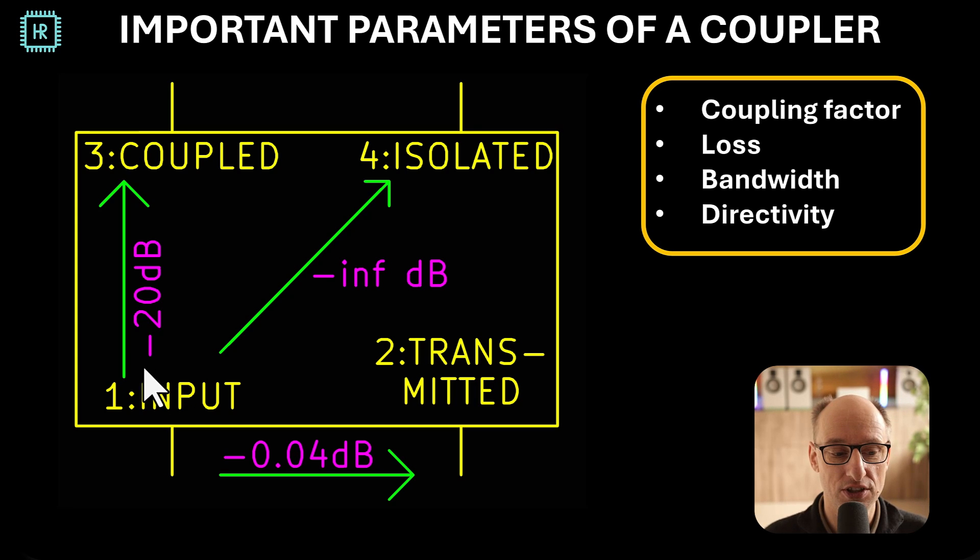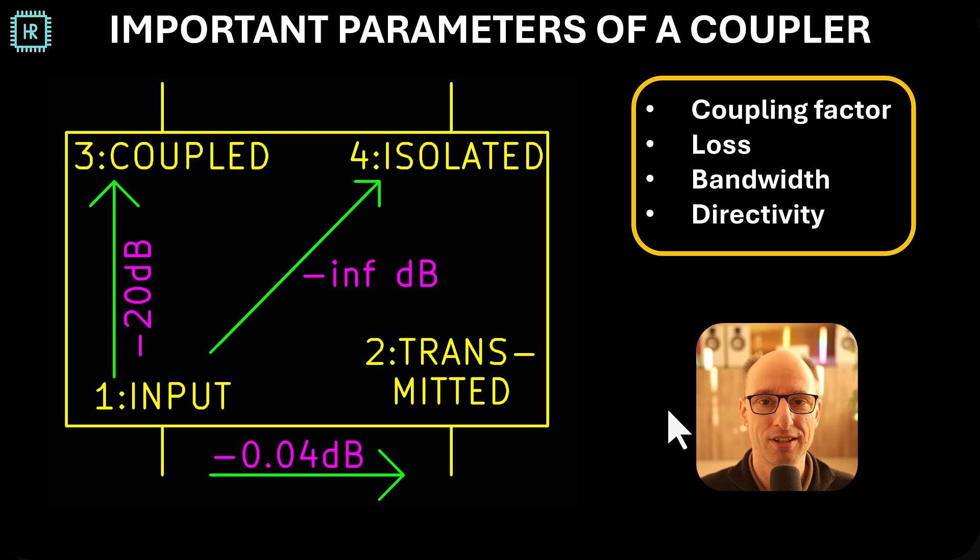And then another very important parameter is directivity. So what is directivity? Directivity is the difference of the loss from the input to the coupled port and the input to the isolated port. So let's assume our simple coupler has a directivity of 5 dB. So what does it mean? The loss from input to coupled is minus 20. The loss from input to isolated is minus 25. The difference between these two is five decibels.